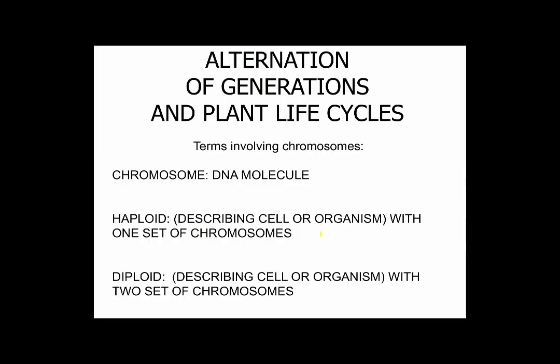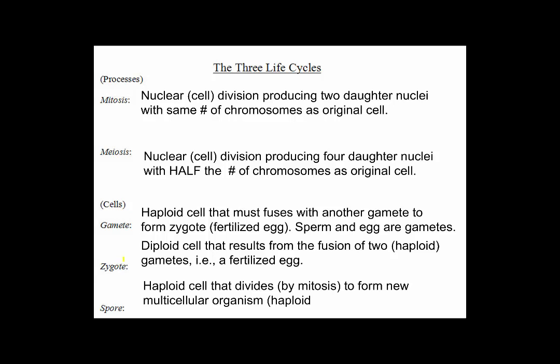We learned about life cycles, and we were especially interested in haploid versus diploid — having one set of chromosomes or more than one. We learned that mitosis is like cloning, where we have two nuclei with the same number and kind of chromosomes. We learned that meiosis is reductive division, where we have four nuclei that have half the number of chromosomes. We learned that a gamete is a single cell that needs to fuse with another gamete — both of them are haploid — and when they fuse they form a diploid zygote, AKA fertilized egg. Something new-ish is a spore, which is kind of like a gamete, but instead of needing to fuse with something, it's a haploid cell that divides by mitosis to form a new haploid multicellular organism.